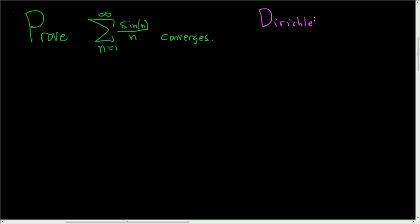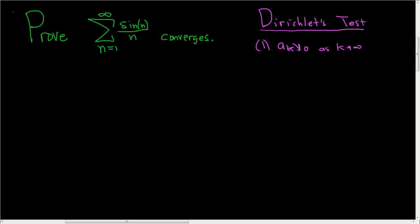So, Dirichlet's test. I'm quickly going to state the test in case you're not familiar with it. There are two conditions. The first one says that if you have a sequence, say a_k, it converges to zero — and the arrow going down indicates that it's also decreasing. So it converges to zero in a decreasing way.